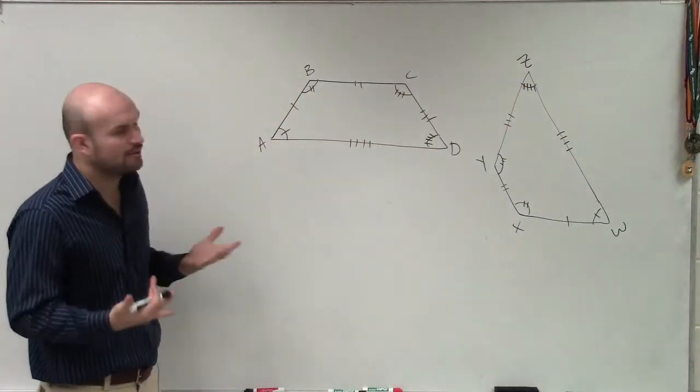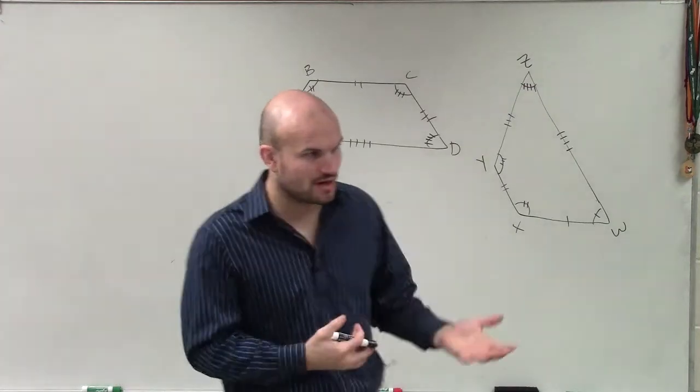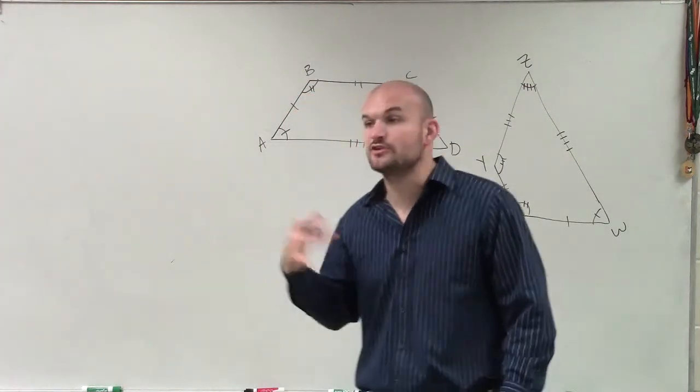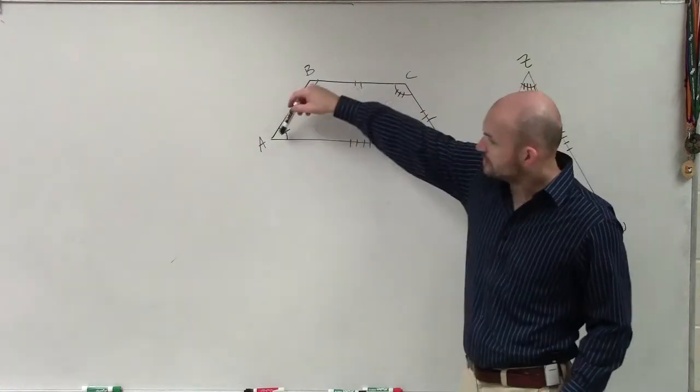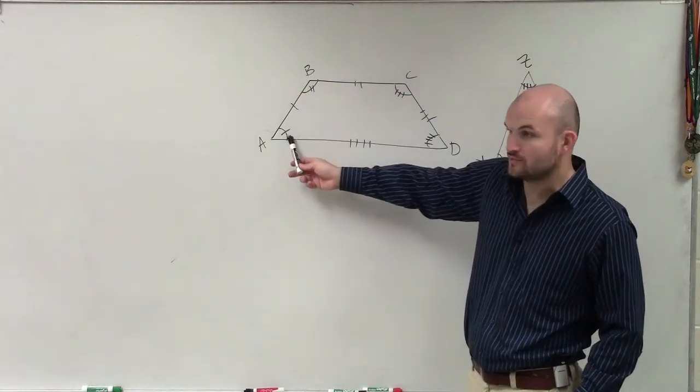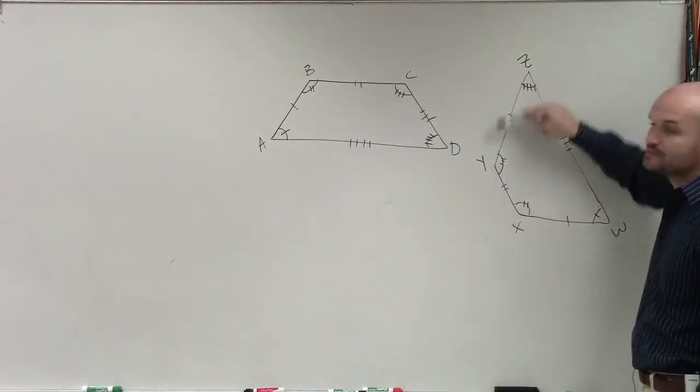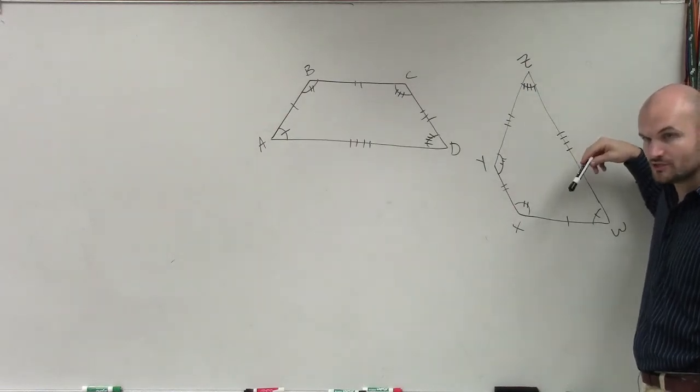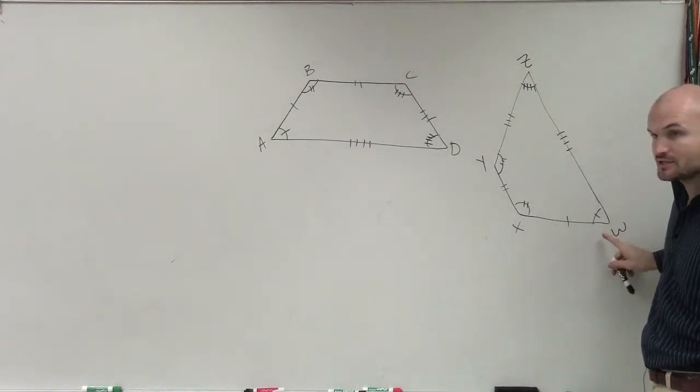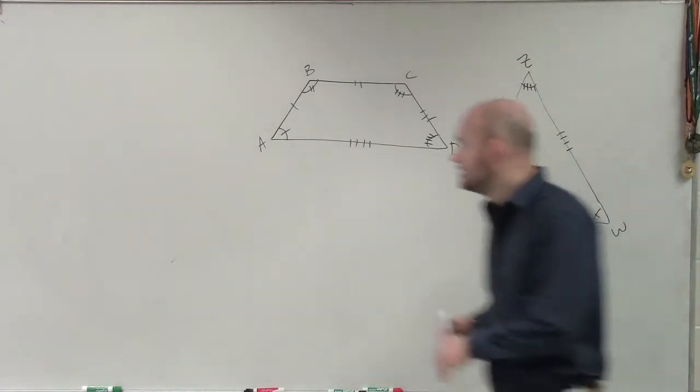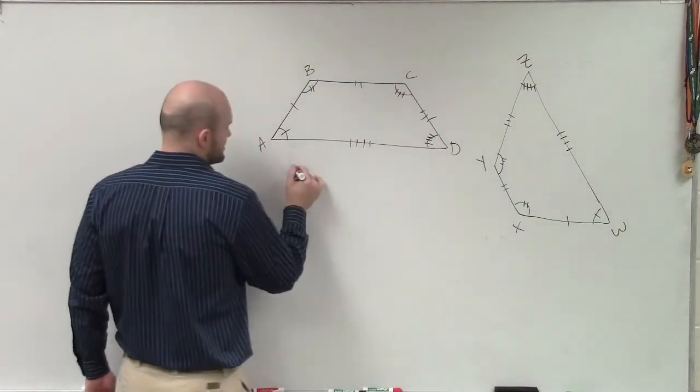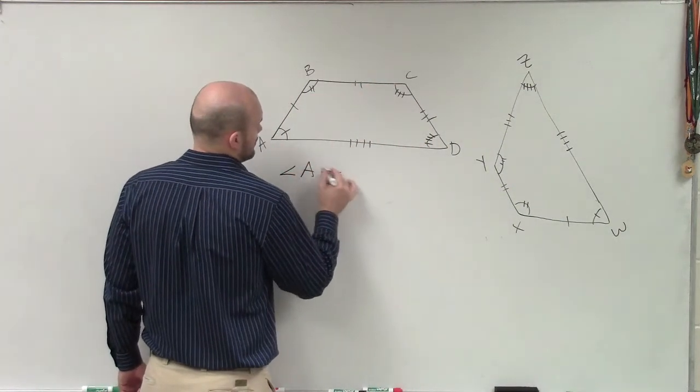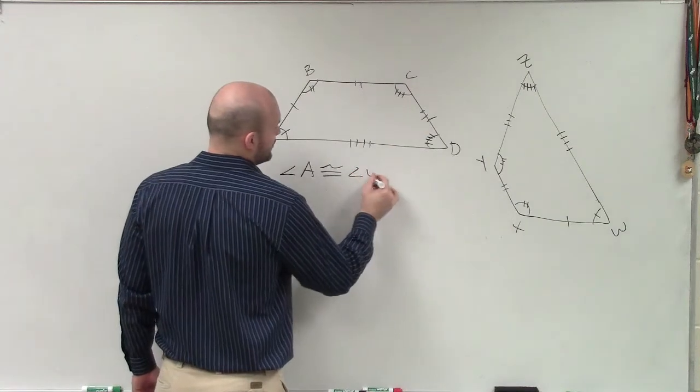So when we're looking at this, what we want to do is just say, go back to our tick mark system and see what is going to be congruent to each other. Well, we look at angle A. And we notice angle A has one tick mark. So I want to see, what is that going to be corresponding to over in this triangle, all right? And you can see that this is corresponding to my angle W. So when writing corresponding parts, I can say that angle A is congruent to angle W.